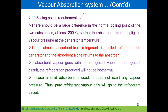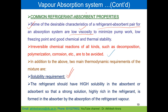The second is the boiling point requirement: there should be a large difference in the normal boiling points of the two substances — at least 200°C — so that the absorbent exerts negligible vapor pressure at the generator. The solubility requirement means that if the affinity of the absorbent for the refrigerant is high, the absorption process is easy, and a highly rich mixture is pumped to the generator.